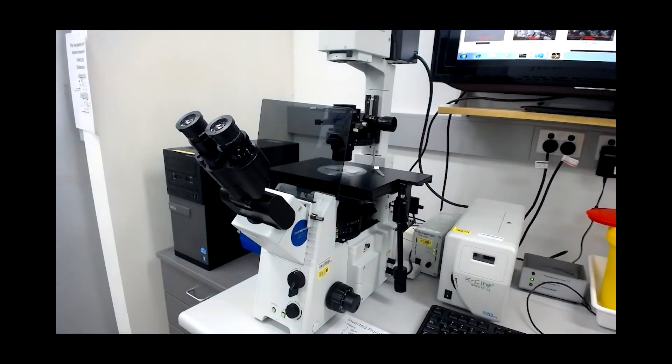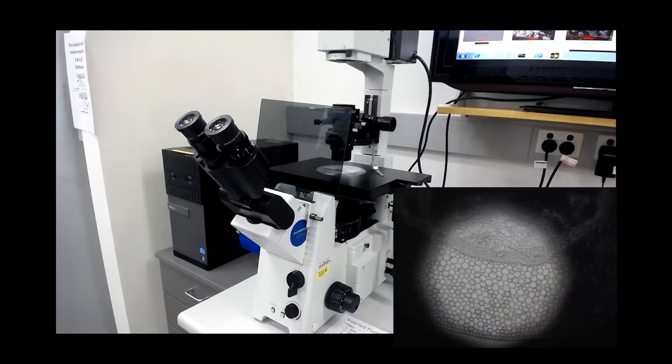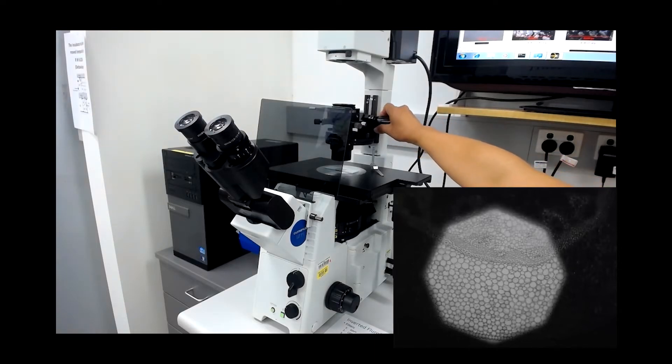Rotate the condenser height adjustment knob and you'll notice that the field of view gets brighter until you do see the polygon. Keep adjusting until the edges are sharp.